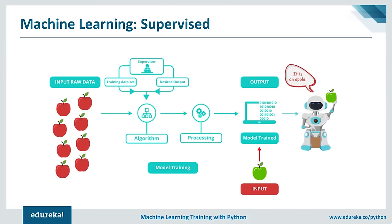Once trained, the algorithm can predict the correct output for a never-seen input. For example, we feed raw images of apples to the algorithm. A supervisor keeps correcting the machine — telling it yes, it is an apple, or no, it is not. This process repeats until a final trained model is ready, which can then easily predict the correct output for new inputs like a green apple.